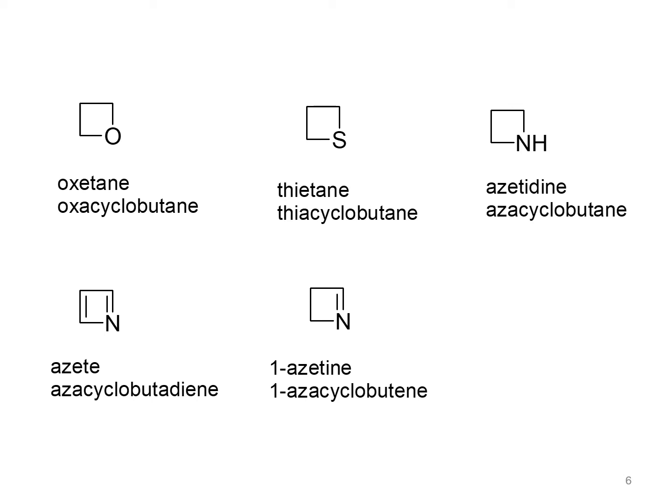Here we can also see some examples of four-membered heterocyclic compounds, such as oxacyclobutane, azacyclobutane, azacyclobutadiene, and azacyclobutene. Some of these compounds are known by their IUPAC name and some are also known by their Hantzsch-Widman system name.